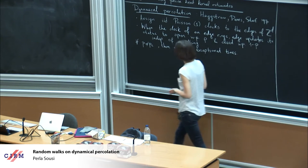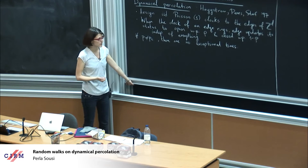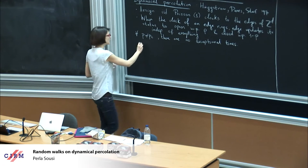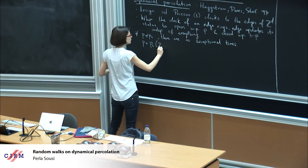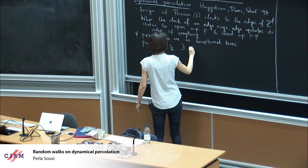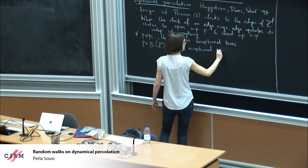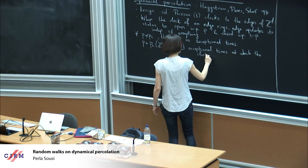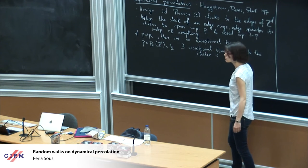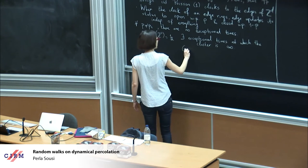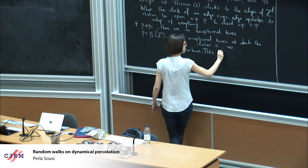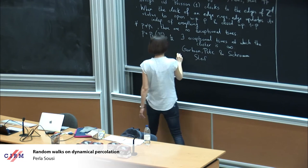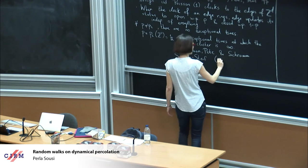The story is different when p equals p_c, and this has been studied in the case of Z^2. For p equal to p_c of Z^2, which is actually equal to 1/2, there are exceptional times at which the cluster is infinite. This was proved by Garban, Pete, and Schramm, building on earlier work of Schramm and Schramm, who looked at the hexagonal lattice.